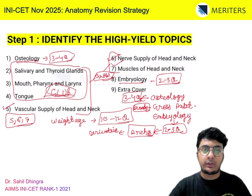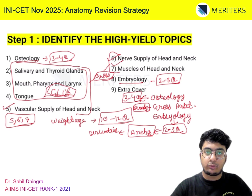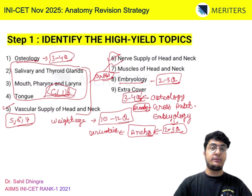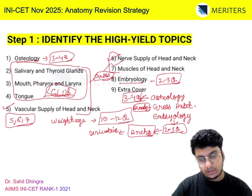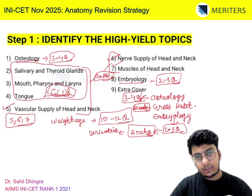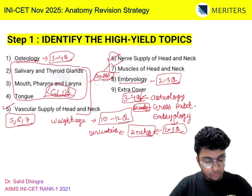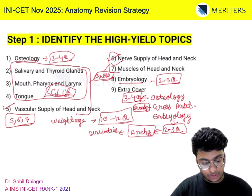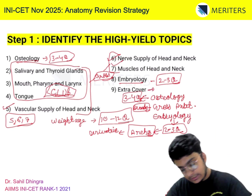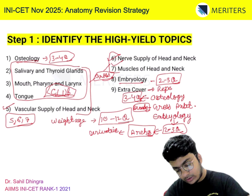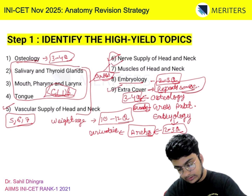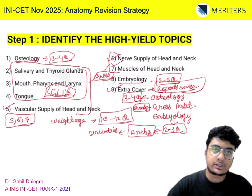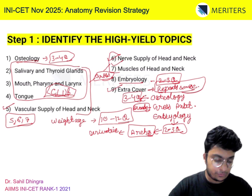For the other group, club chapters 2, 3, and 4 together and read them at one stretch, as they cover similar topics — salivary gland, mouth, pharynx, larynx, and tongue. These are comparatively smaller chapters. Additionally, cover past repeats and miscellaneous content, which includes past INICET as well as NEET questions for anatomy.